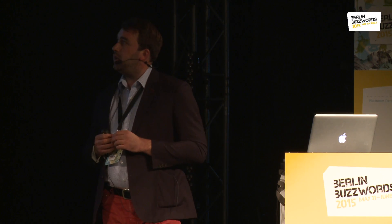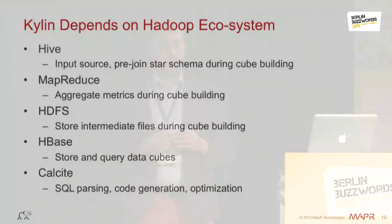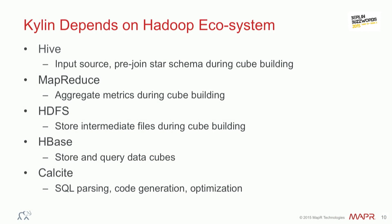Kylin uses a lot of the components that already exist in Hadoop. It uses Hive to pre-join, pre-articulate, and pre-aggregate views for cube building. It uses MapReduce to generate the cube excerpts, and uses HDFS and HBase to store the values. Imagine a cube as a key-value pair — the combinations in a cube are stored in HBase. They query through an ANSI SQL interface and interface with HBase directly.